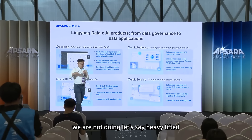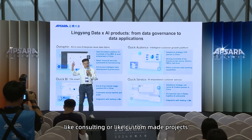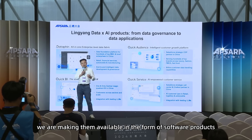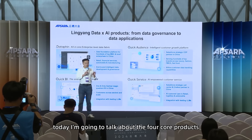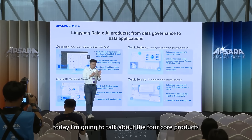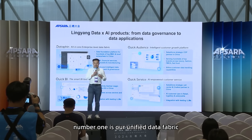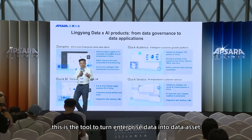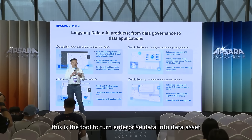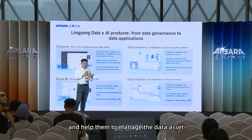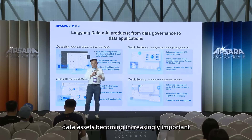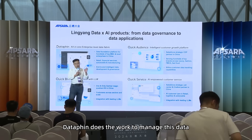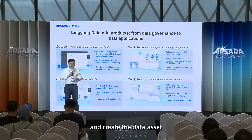All our capabilities are not delivered as consulting or custom-made projects — we make them available in the form of software products. Today I'm going to talk about the four core products we provide on Alibaba Cloud. Number one is our unified data fabric, which we call DataFin. This is the tool to turn enterprise data into data assets and help manage them — especially important in the large language model world, where data assets are increasingly critical.